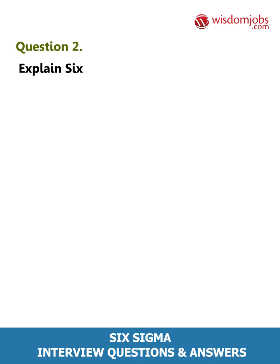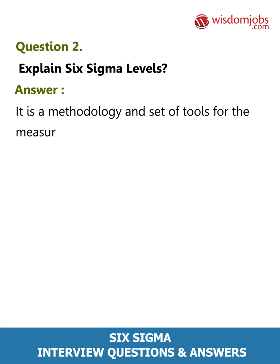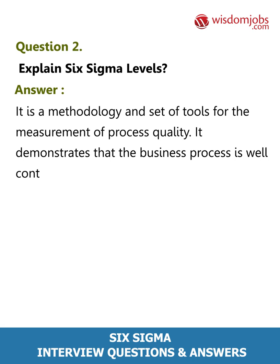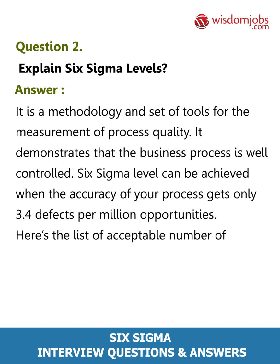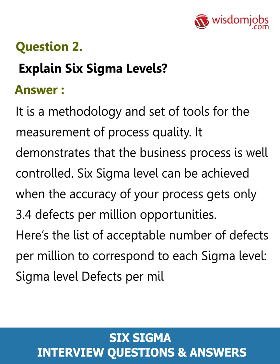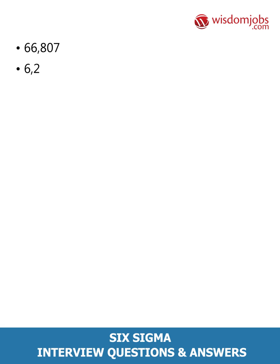Question 2: Explain Six Sigma levels. Answer: It is a methodology and set of tools for the measurement of process quality. It demonstrates that the business process is well controlled. Six Sigma level can be achieved when the accuracy of your process gets only 3.4 defects per million opportunities. The sigma levels and corresponding defects per million opportunities are: 1-sigma: 690,308; 2-sigma: 308,537; 3-sigma: 66,807; 4-sigma: 6,210; 5-sigma: 233; 6-sigma: 3.4.